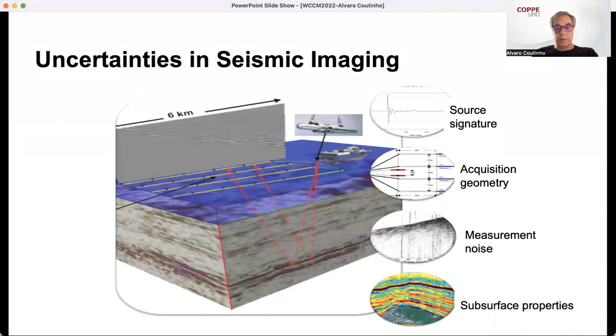Uncertainties in seismic imaging are found in several aspects. The picture shows this typical offshore survey, and the seismic imaging is basically to produce images from recorded signals from wave reflections in the subsurface. Uncertainty can come from the source signature, acquisition geometry, measurement noise, and of course, the subsurface properties, which are unknown. In this work, we restrict ourselves to subsurface properties, uncertainties in the subsurface properties.